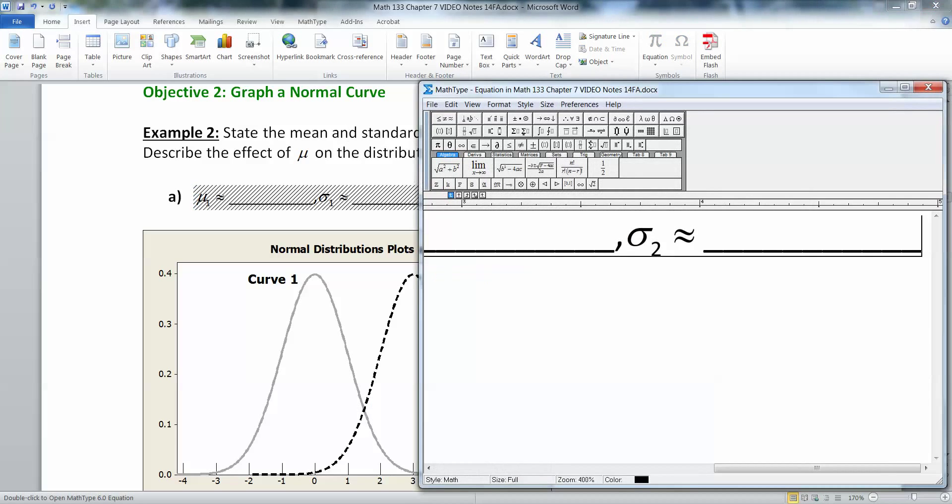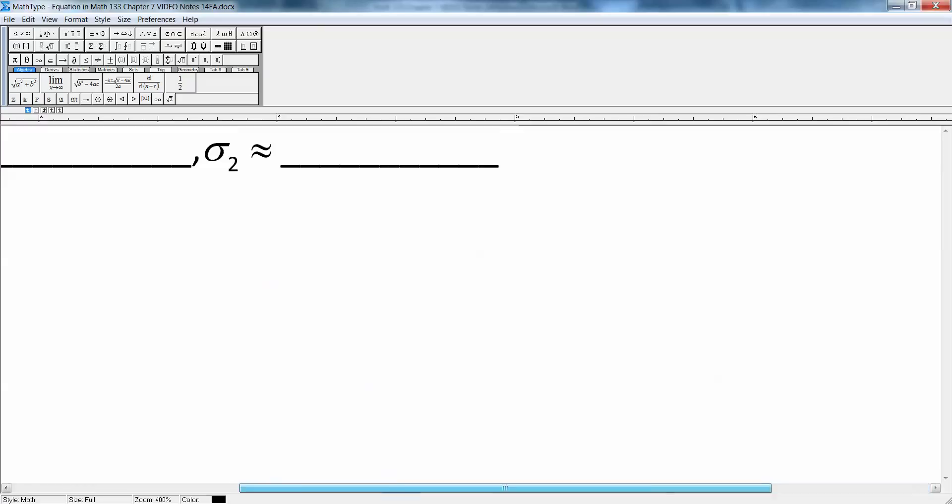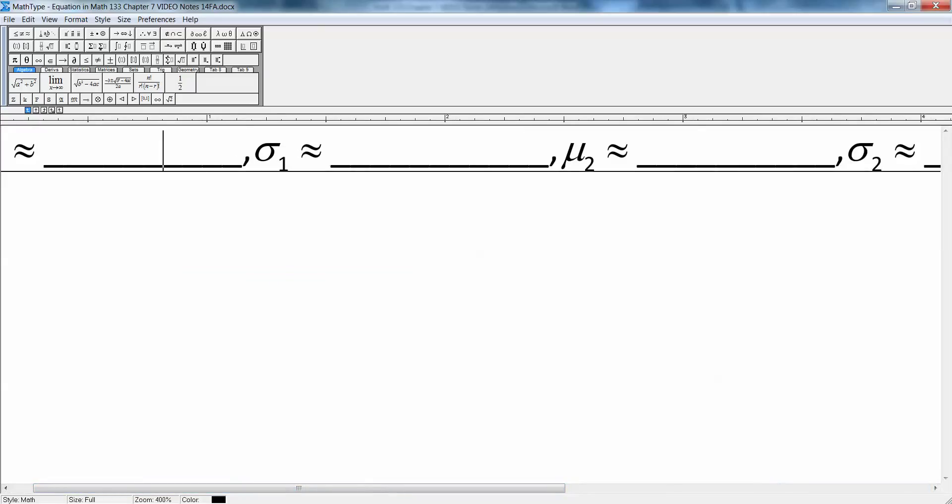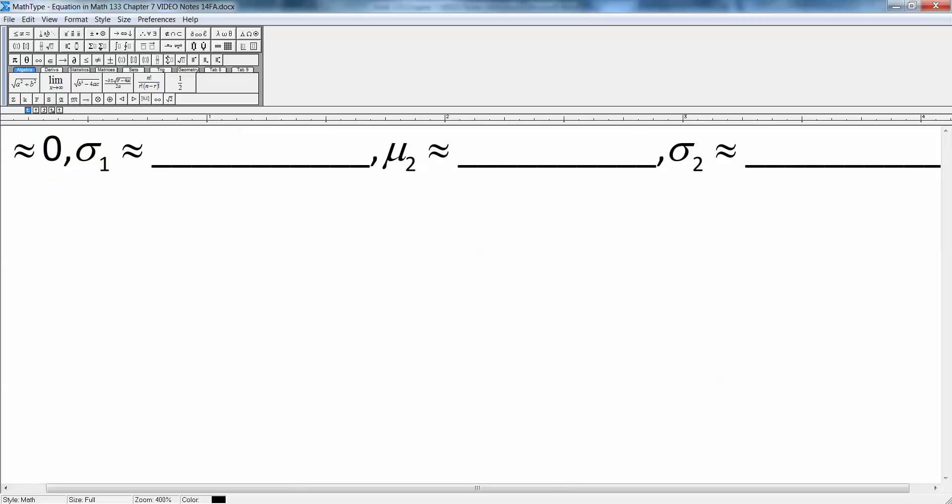Okay, so let me type that up. So curve number one had a mean of zero, approximately, and curve number two had a mean of three. Great.